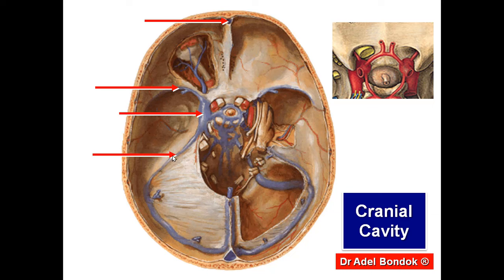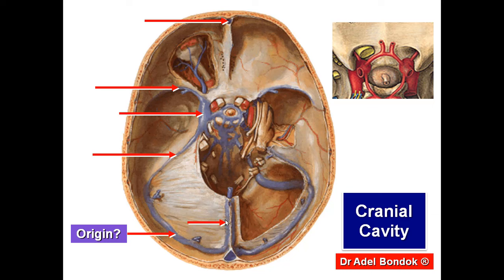This is the superior petrosal sinus. This is the left transverse sinus, which is the continuation of the straight sinus. The right transverse sinus is the continuation of the superior sagittal sinus. The sigmoid sinus is the continuation of the transverse sinus.